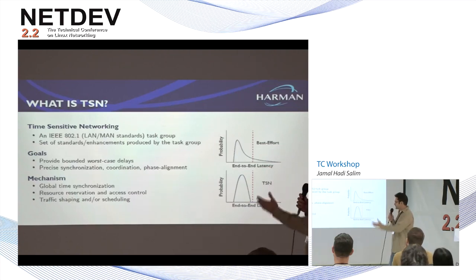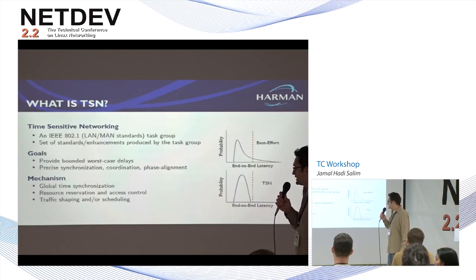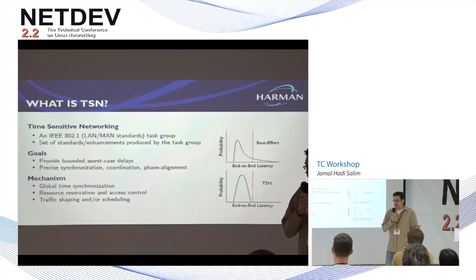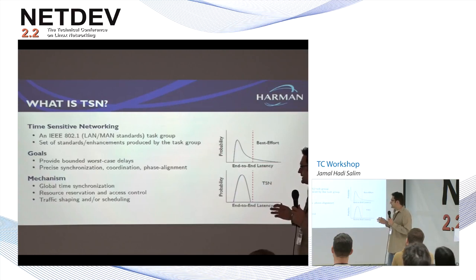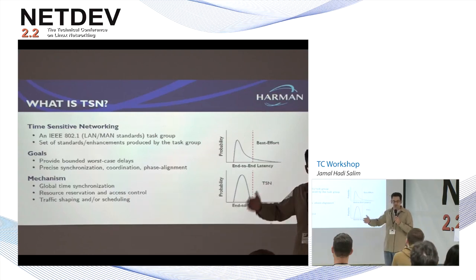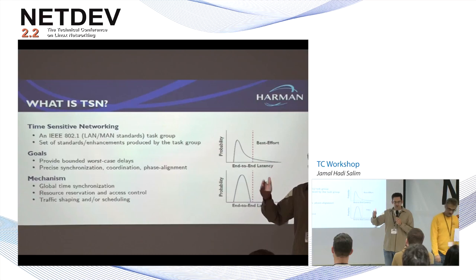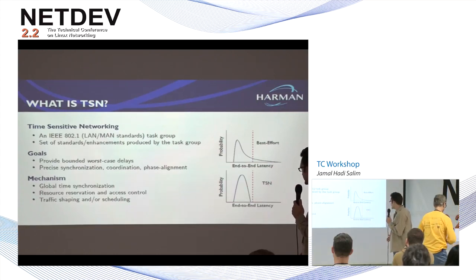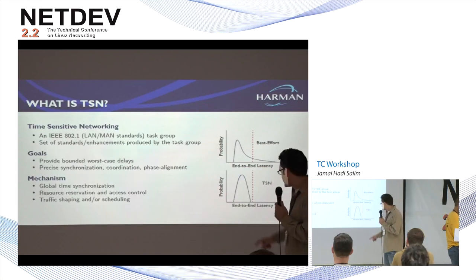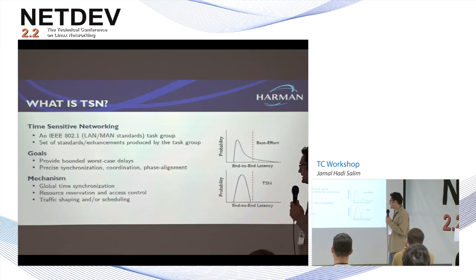Time-sensitive networking comes from the IEEE 802.1 standards task group of the same name. There are something like 12 or 13 standards, all geared around providing bounded worst-case delays. When you have best-effort traffic, that's the best policy for most traffic, but there are use cases where you need reliable bounds. With time-sensitive networking, you can eliminate the long tail of best-effort traffic and have reliable bounds.